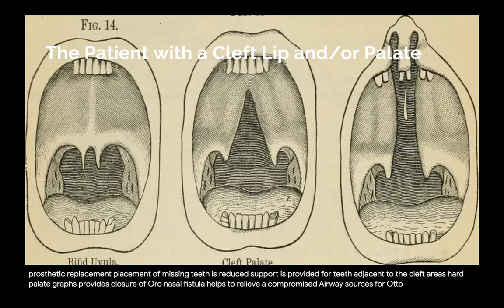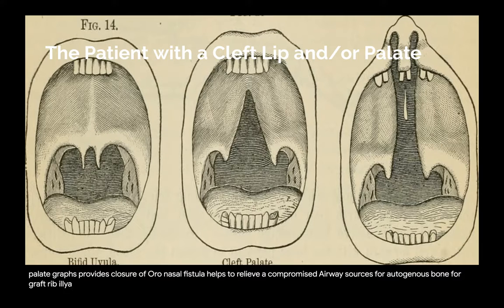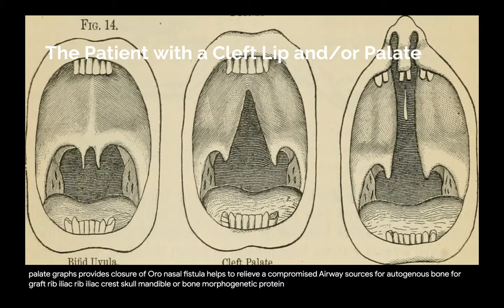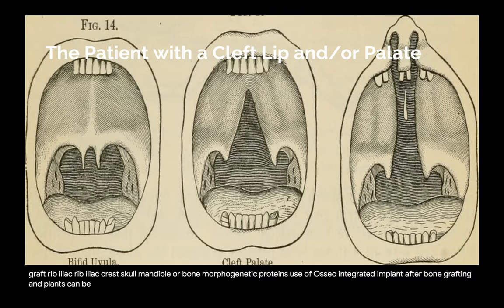Sources for autogenous bone for graft include rib, iliac crest, skull, mandible, or bone morphogenetic proteins. Use of osseointegrated implants: after bone grafting, implants can be used to replace individual teeth and also provide support for a complete prosthesis.